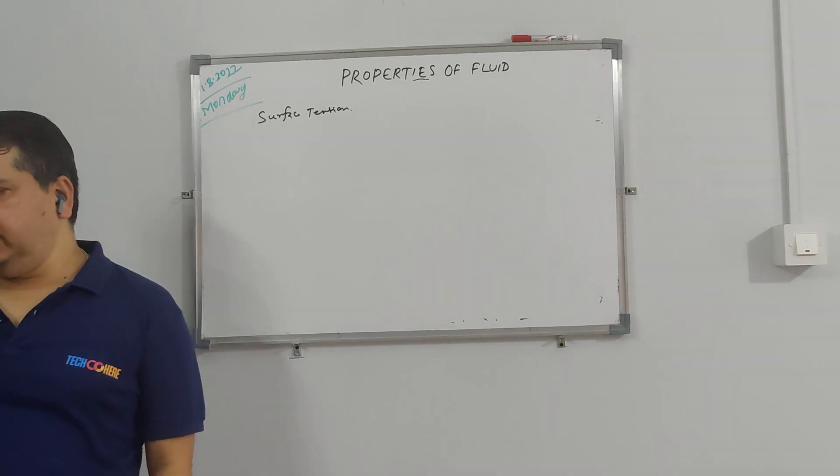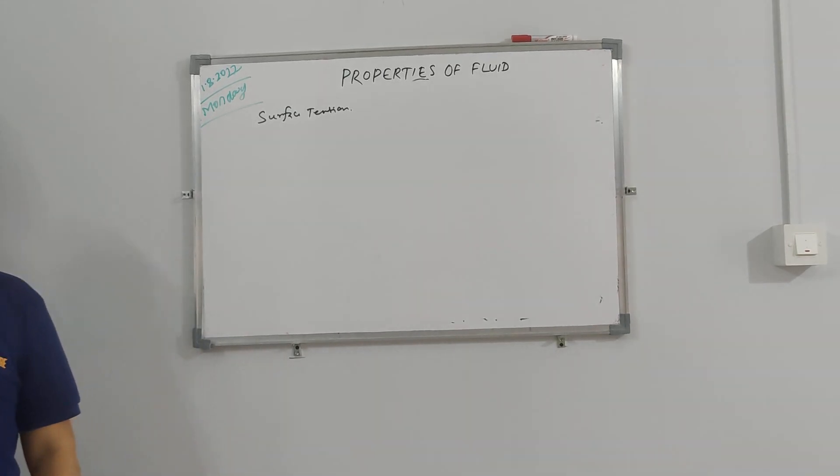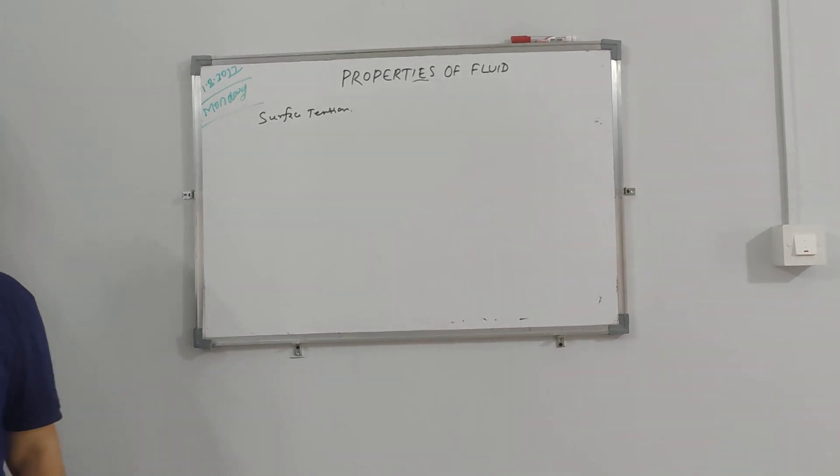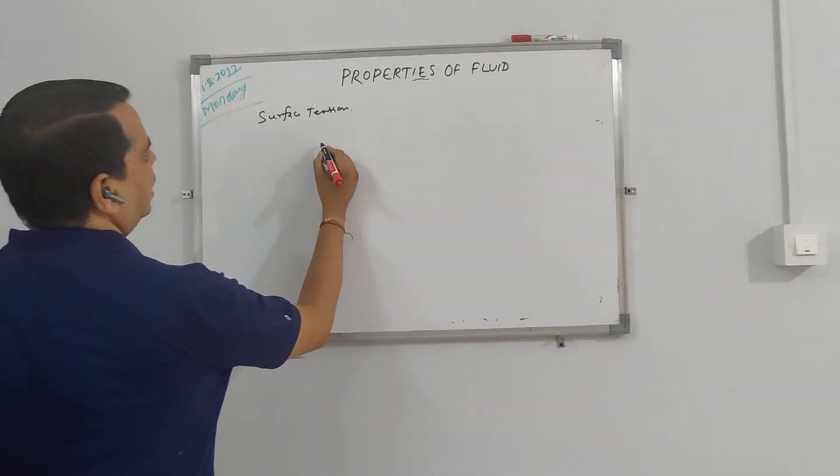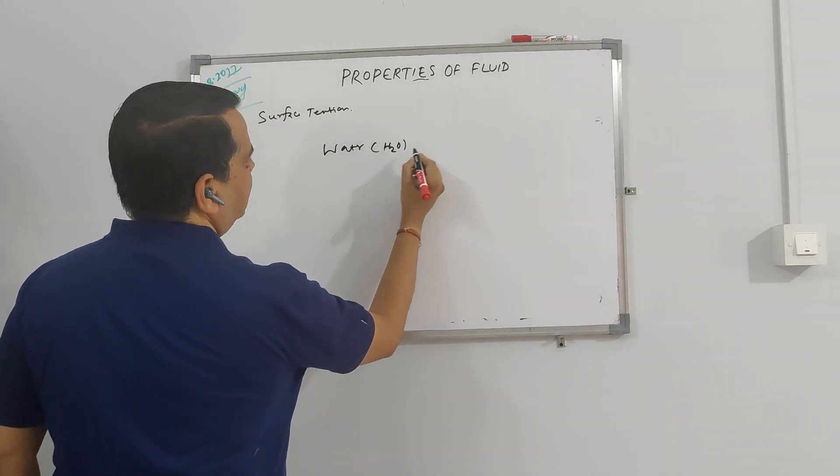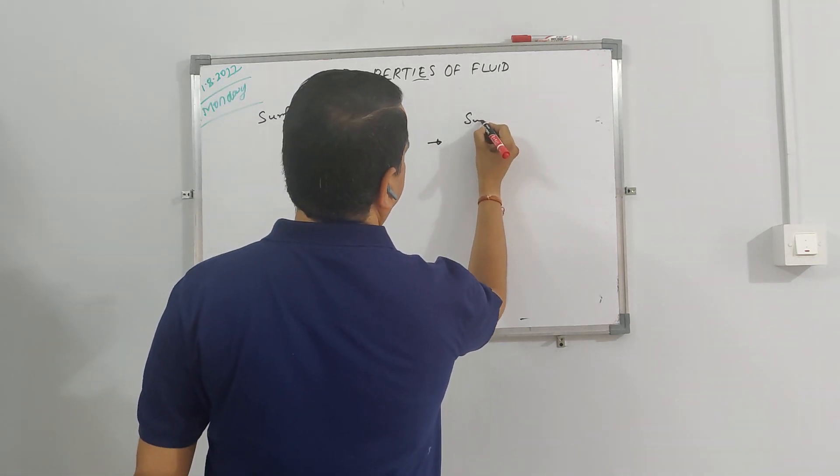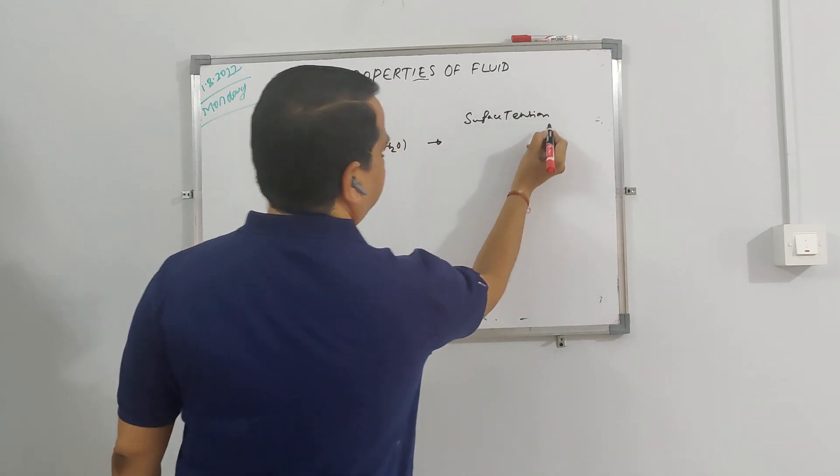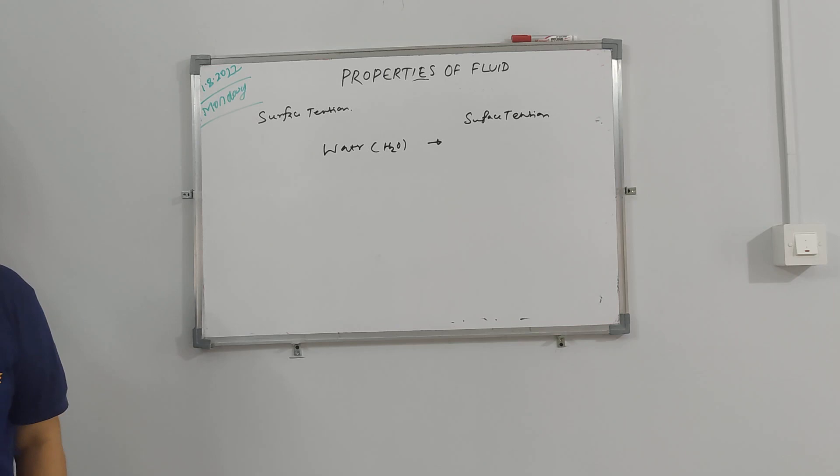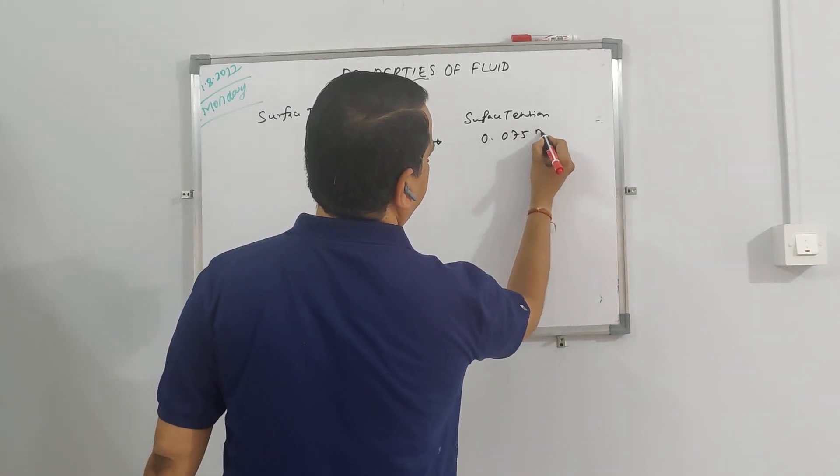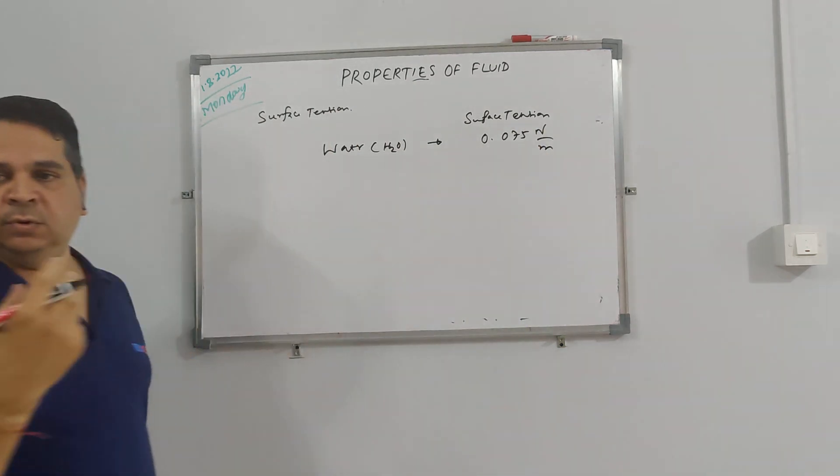So we will take some typical values of different surface tension values, which is nothing but your cohesive force. You have water, which is H2O, and the surface tension value for water is 0.075 Newton per meter, because you know force per unit length.